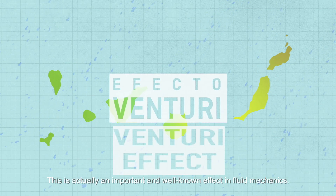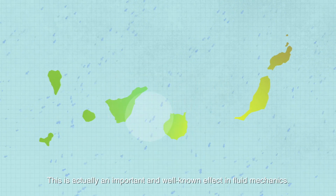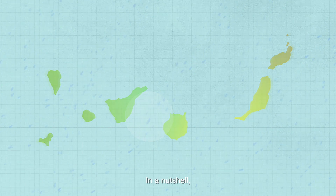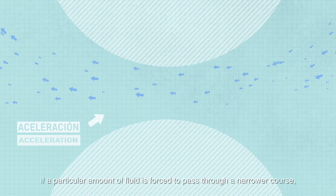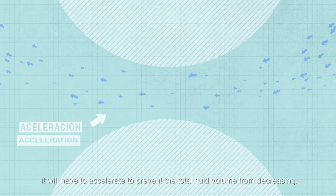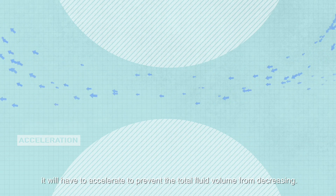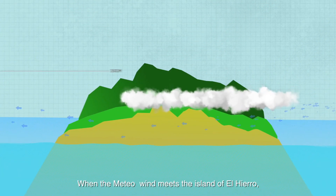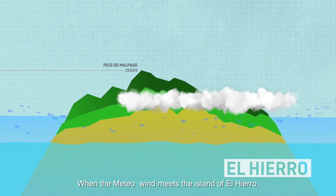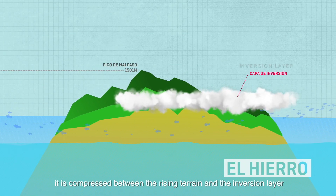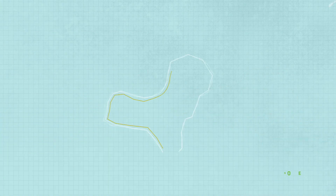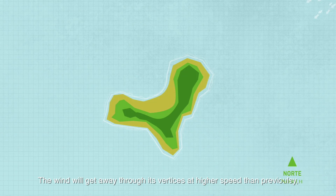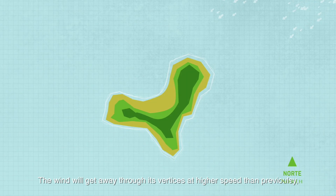This is an important and well-known effect in wind fluid dynamics — the Venturi effect. In a nutshell, if a particular amount of fluid is forced to pass through a narrow constriction, it will have to accelerate to prevent the total fluid volume from decreasing. When the meteorological wind meets the island of El Hierro, it is compressed between the rising terrain and the inversion layer, with a consequent increase in speed.